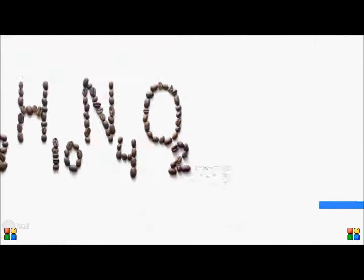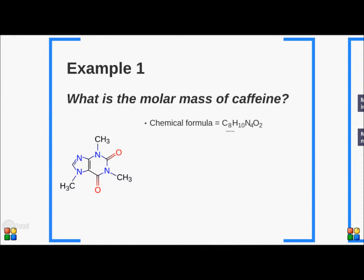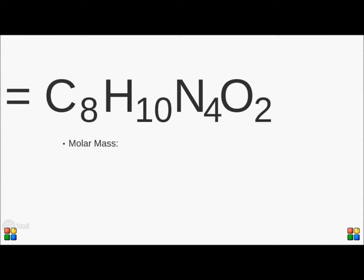Let's use caffeine as an example. To work out the molar mass of caffeine, the first thing we need to do is work out the chemical formula for caffeine — counting up how many of each type of atom are present in the molecule. Looking closely, we can see that there are a total of 8 carbons, 10 hydrogens, 4 nitrogens, and 2 oxygens. From the periodic table, the atomic mass of carbon is 12.01. Multiplying this by 8, because there are 8 carbons in caffeine, we get 96.08.